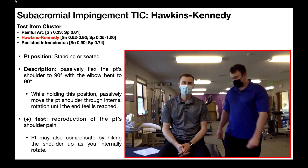We're now going to look at the Hawkins-Kennedy test, which is unique to the subacromial impingement test item cluster. The sensitivity ranges between 0.62 and 0.92 depending on the study, and on average will probably fall in the mid-80s, so this has pretty good utility in ruling out subacromial impingement syndrome. The specificity ranges all the way from 0.25 to 100%, so given that wide range, I wouldn't rely on specificity as much. In short, the sensitivity is better as an individual test — if you want to quickly screen and rule out subacromial impingement syndrome, use the Hawkins-Kennedy test. If the test is negative, there's roughly an 80–85% chance that they do not have impingement syndrome.